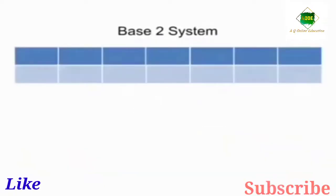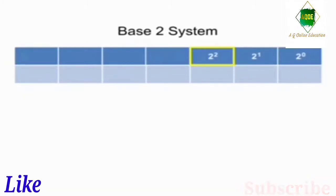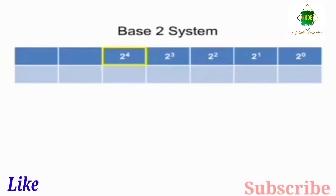Now, let's consider place value in the base 2 system. Starting at the right, we have 2 to the 0 power, then 2 to the first power, then 2 to the second power, and so on.